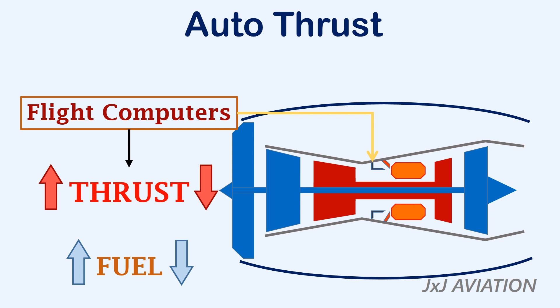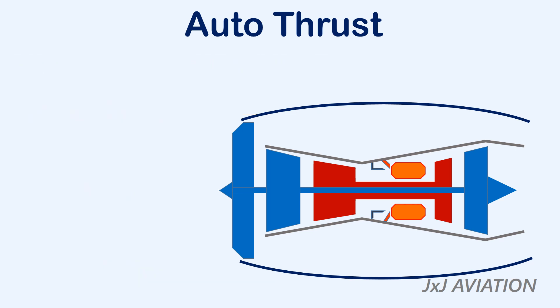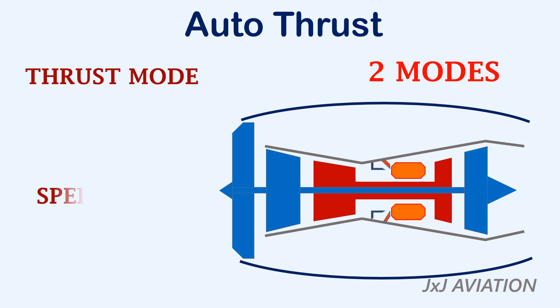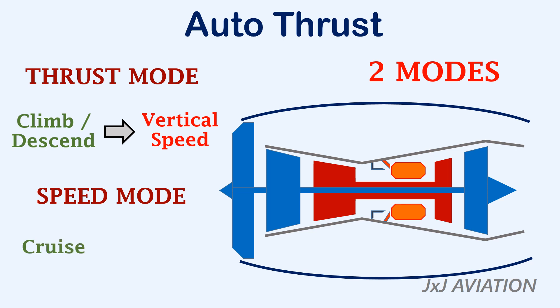The flight computers may get inputs from the pilot, who can select a particular speed, or from the autopilot to adjust the aircraft speed according to the phase of flight. The autothrust may function in two modes: thrust mode or speed mode. Thrust mode is applicable during climb or descent, where the autothrust controls the engine's thrust to achieve a desired vertical speed. Speed mode is applicable in the cruise phase, where the autothrust controls the engine to maintain a particular aircraft speed.